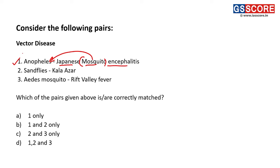Second pair: sandflies and Kala-azar. This is also a correct statement — sandflies lead to leishmaniasis, which is nothing but Kala-azar. Third pair: Aedes mosquito and Rift Valley fever. This is also a correct pair. Aedes mosquito also leads to diseases like Chikungunya and Dengue, and Anopheles mosquito also leads to malaria. All three pairs are correctly matched, so the answer is D, 1, 2 and 3.